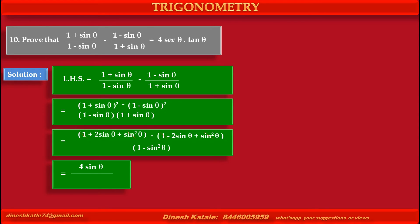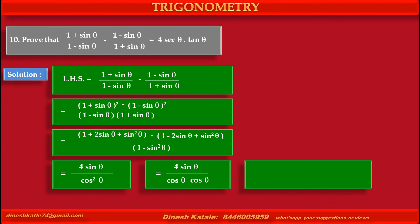This equals 4sinθ upon cos²θ, that is cos θ × cosθ, which equals 4 × (1/cosθ) × (sinθ/cosθ), that is 4 × secθ × tanθ, which is the required right hand side.